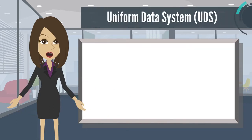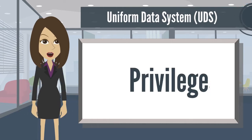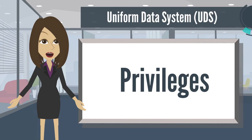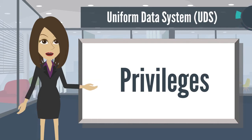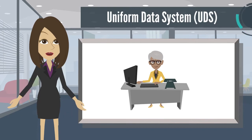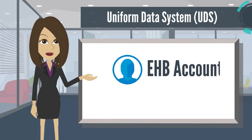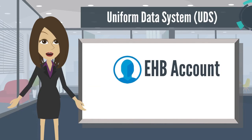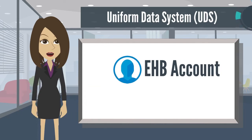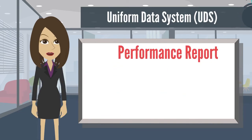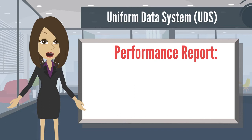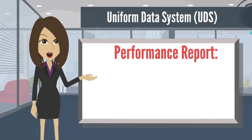This may be your first time working on a UDS report within the Electronic Handbook, EHB. So to get you started, let's go over the required EHB privileges and how to access the UDS report. To work on the UDS performance report in the EHB, you must have the following: an EHB account that is registered to the organization you work for, been granted access to the health center program grant or lookalike designation, and you will need to be provided with one of the following EHB performance report privileges.